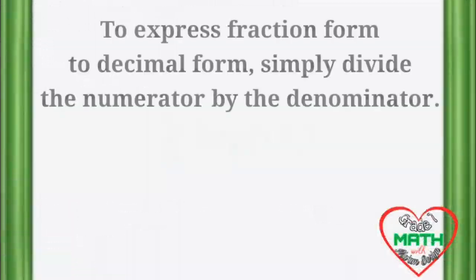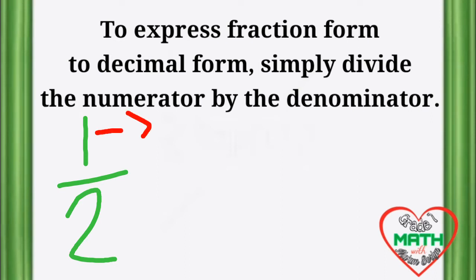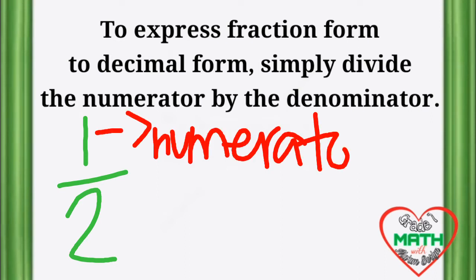To express fraction form to decimal form, we will simply divide the numerator by the denominator. In a fraction, the number above is what we call the numerator and the number below is what we call the denominator.